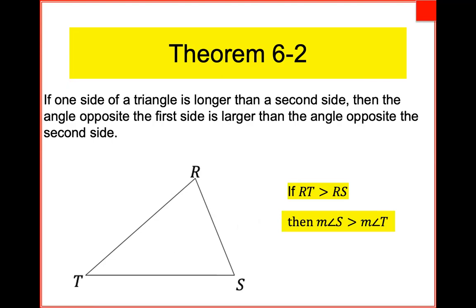So if you find the biggest angle, the side opposite it has to be the biggest side. Can we say the converse? That's the next thing we do — we've got to prove it though. The book doesn't do it the same way. I'm going to do it by proof by contradiction, just to show you an example.